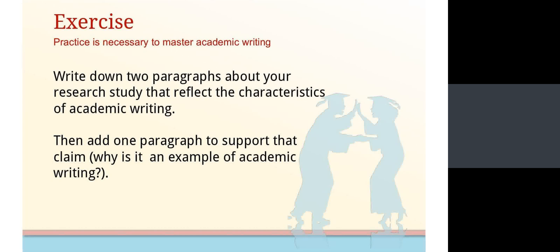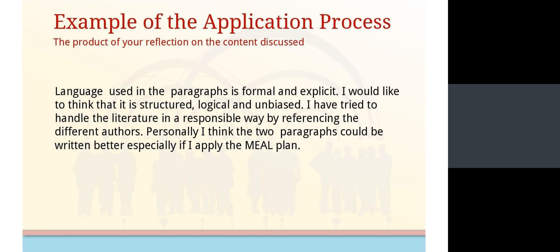Let's begin by talking about how you applied what we discussed about the characteristics of academic writing last week. In each section from now on, we are going to begin by discussing how you applied what we discussed and what you produced. The exercise was focused on writing two paragraphs that have the characteristics of academic writing and a reflection about why you think they are a piece of academic writing. This is a very good example of the reflection I asked for.